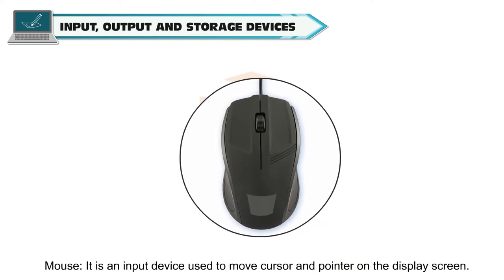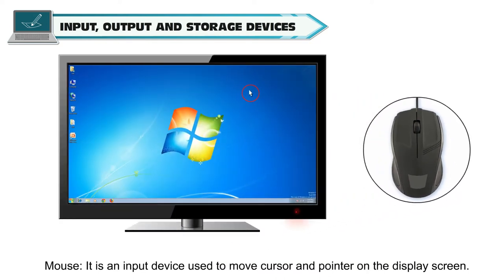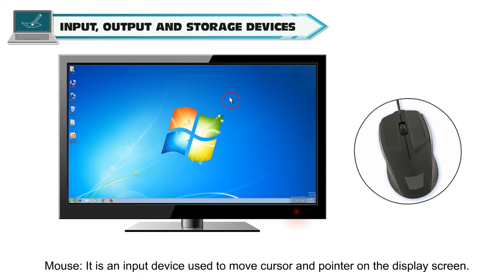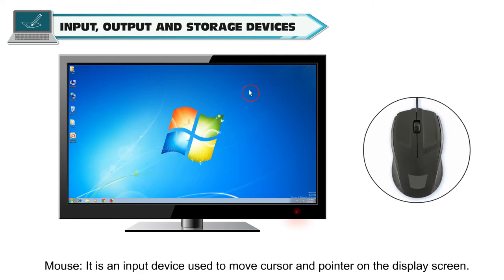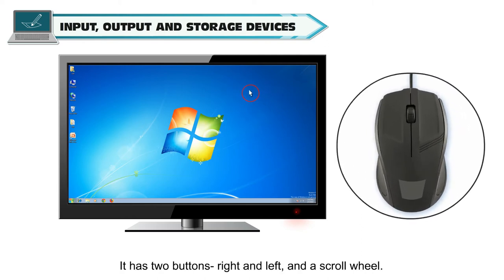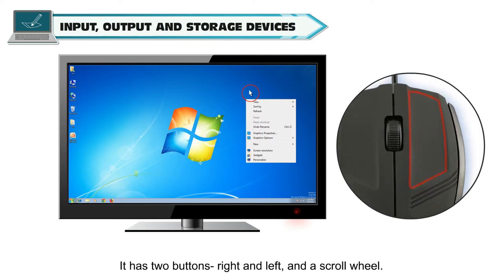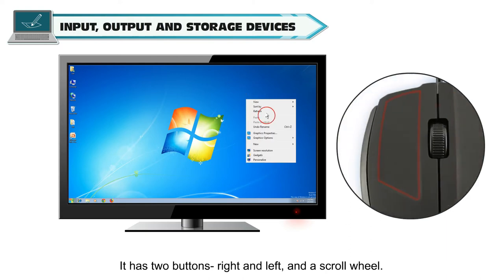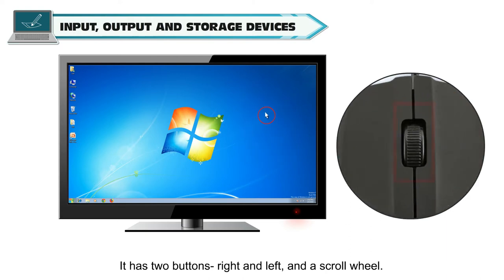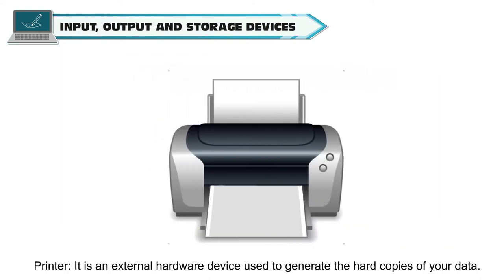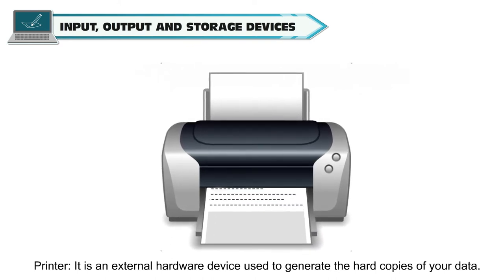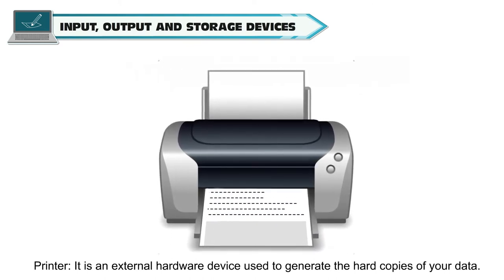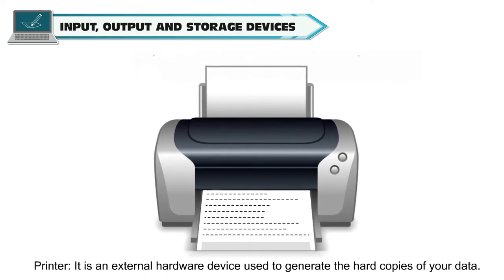Mouse. It is an input device used to move the cursor and pointer on the display screen. It has two buttons, right and left, and a scroll wheel. Printer. It is an external hardware device used to generate hard copies of your data.